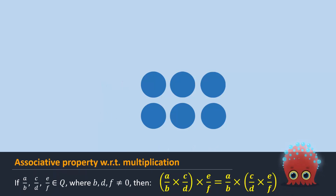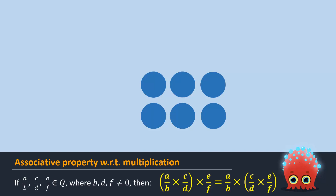If A over B, C over D, and E over F are any three rational numbers where B, D, and F are not equal to 0, then we get the following law. This is called the associative property of rational numbers with respect to multiplication.